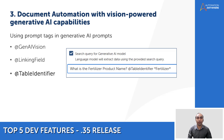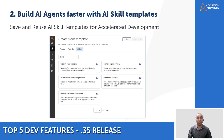Moving on to number 2: build AI agents faster with AI skill templates. AI skills can now be saved as templates, making it easy to share across your organization. With pre-built customizable templates, you can quickly build robust and scalable AI agents, accelerating your time to value and streamlining agentic process automation. Whether you are a citizen developer or a professional developer, you can select from a list of pre-built templates to create new AI skills tailored to your specific automation goals.